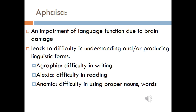One of the problems concerning language production and comprehension is what is called aphasia. Aphasia is an impairment of language function due to brain damage, which consequently leads to difficulty in understanding and/or producing linguistic forms. For example, alexia is difficulty in reading, agraphia is difficulty in writing, while anomia is difficulty in using proper nouns and words.